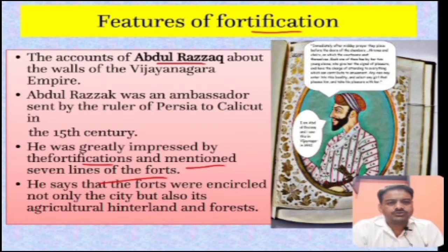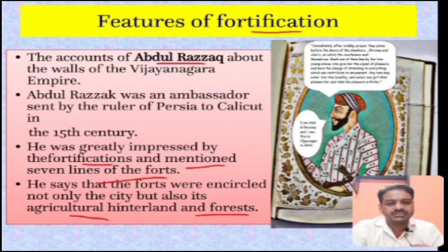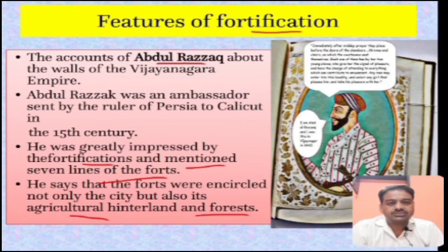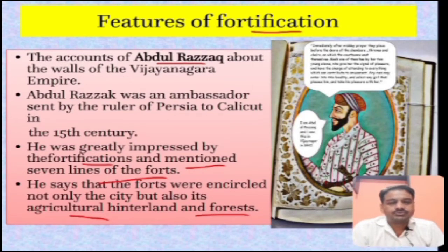He says that the forts encircled not only the city but also the agricultural hinterland and forest. Historians interpret this as a response to sieges. In medieval times there used to be a lot of sieges - when an enemy attacked a kingdom, they would surround the fort to starve the people into submission. If food supply was stopped, the people had to surrender because they would not have adequate food.